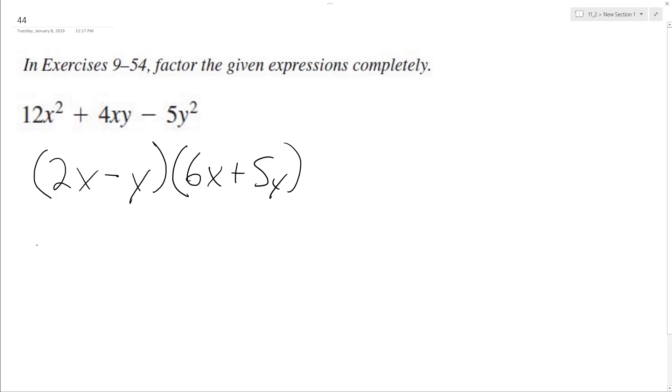So 2x times 6x is 12x squared plus 10xy minus, and then we're doing the negative y now, 6xy, and then negative y times 5y is minus 5y squared.